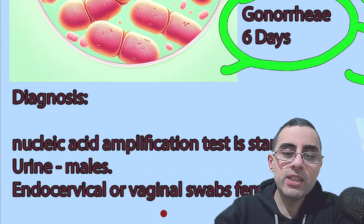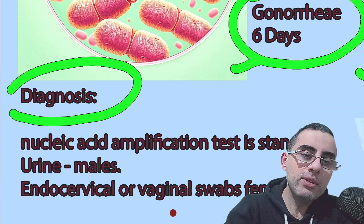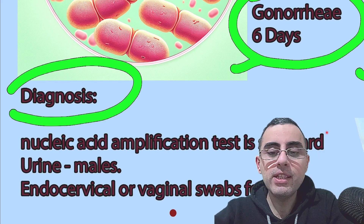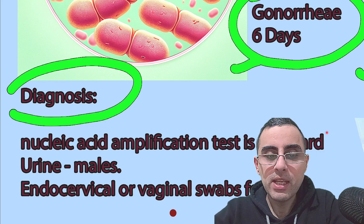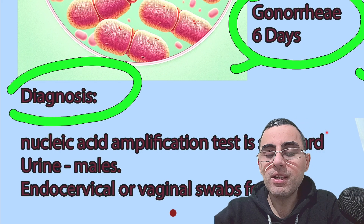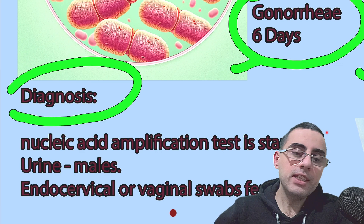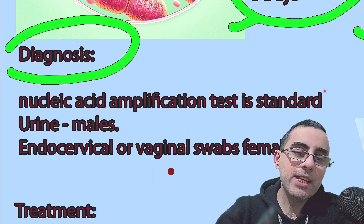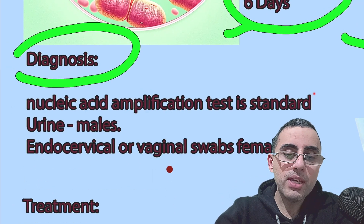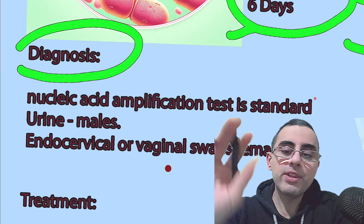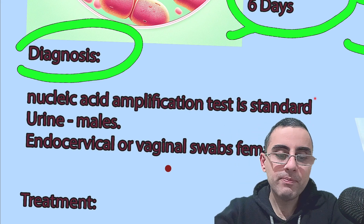Diagnosis and screening use the nucleic acid amplification test, which is the gold standard. In males, the sample is taken from a urine test. For women, endocervical or vaginal swabs are used.